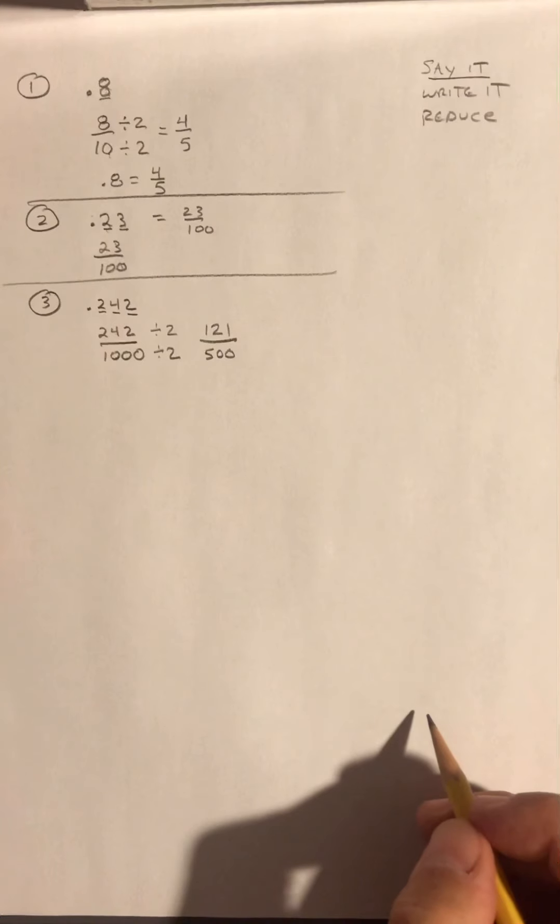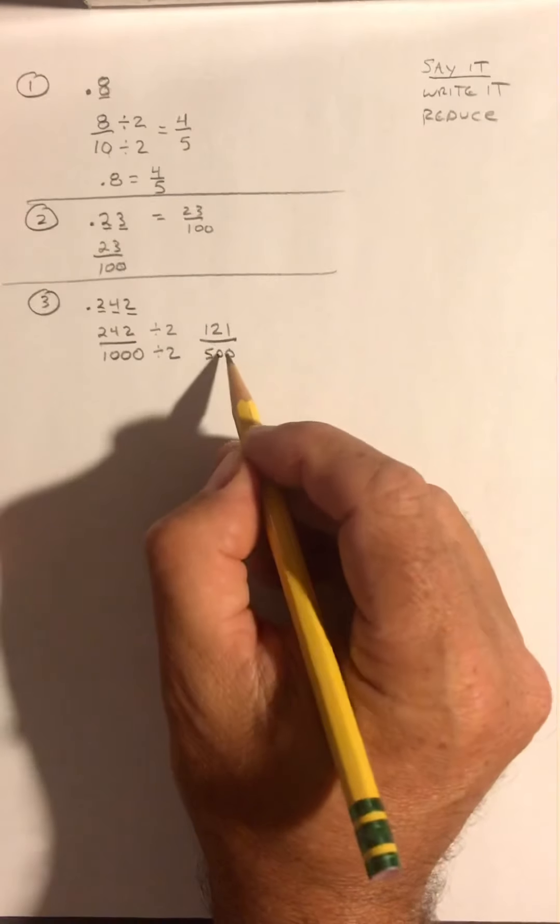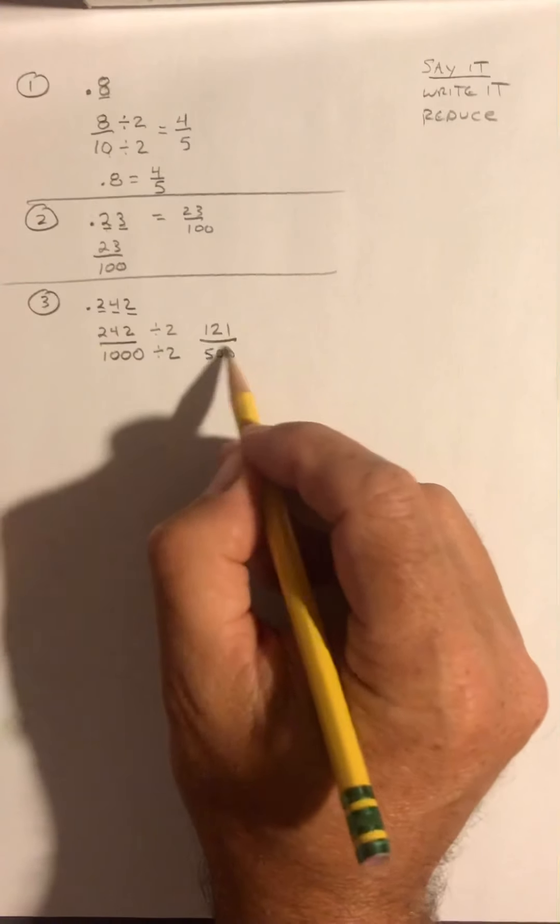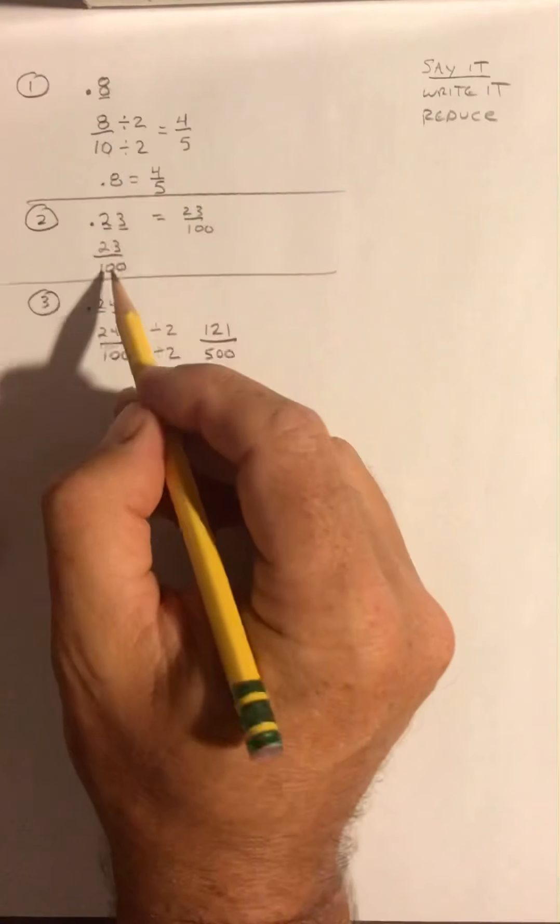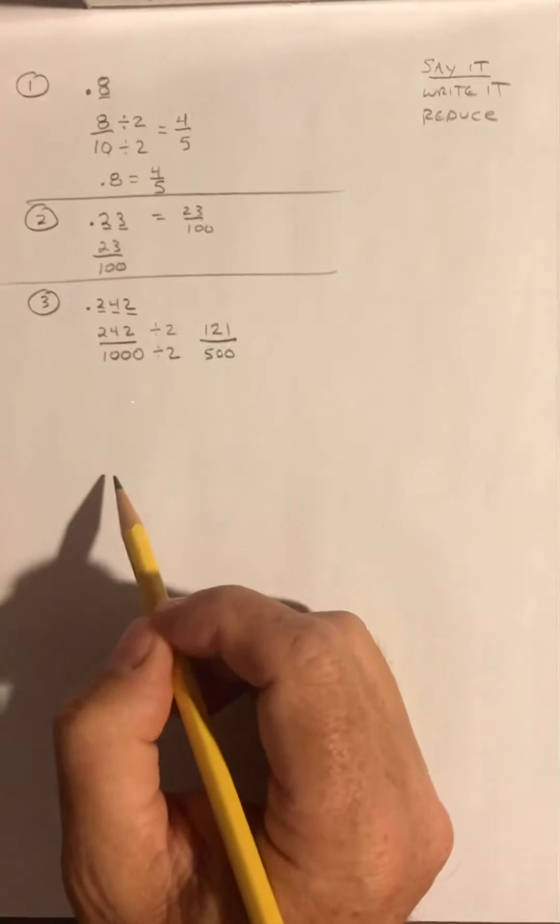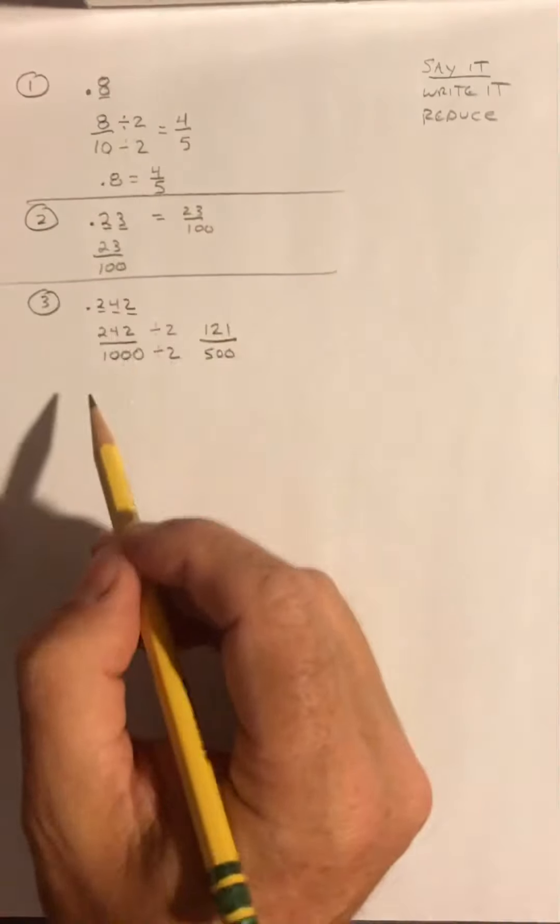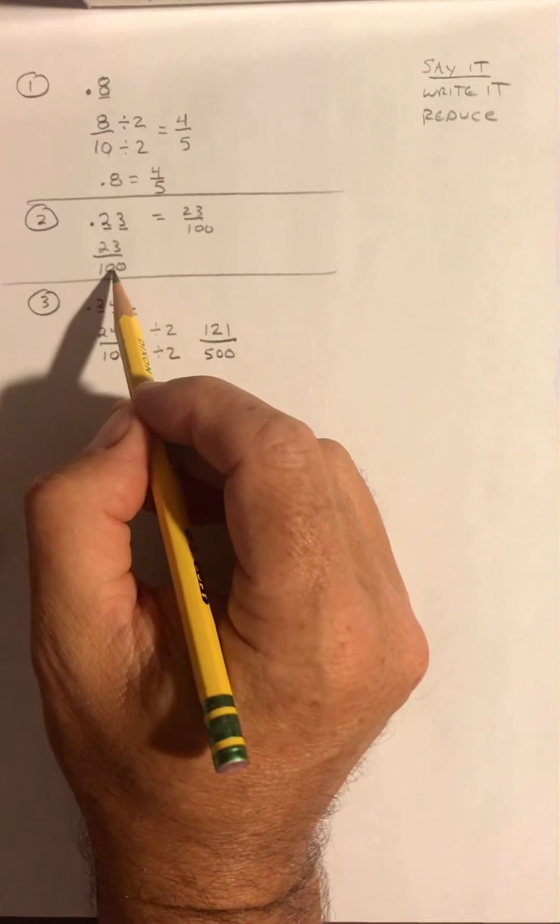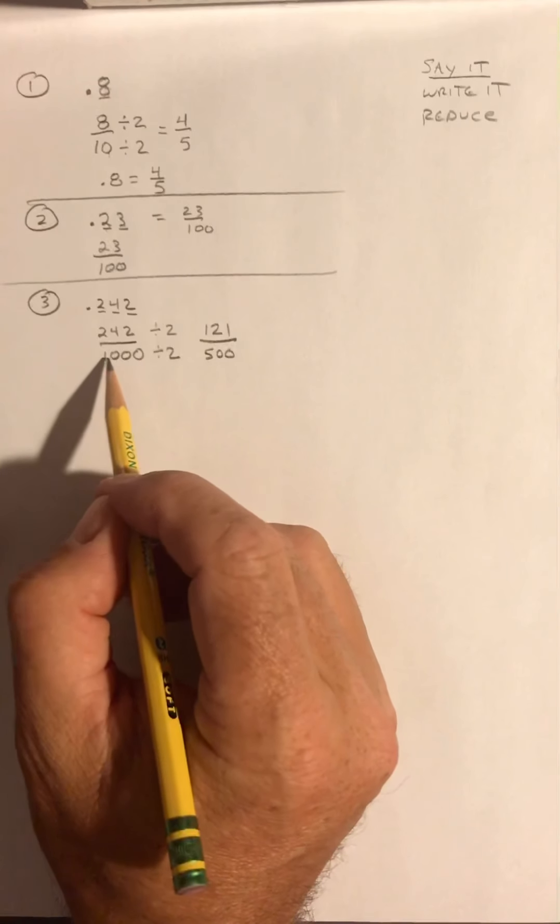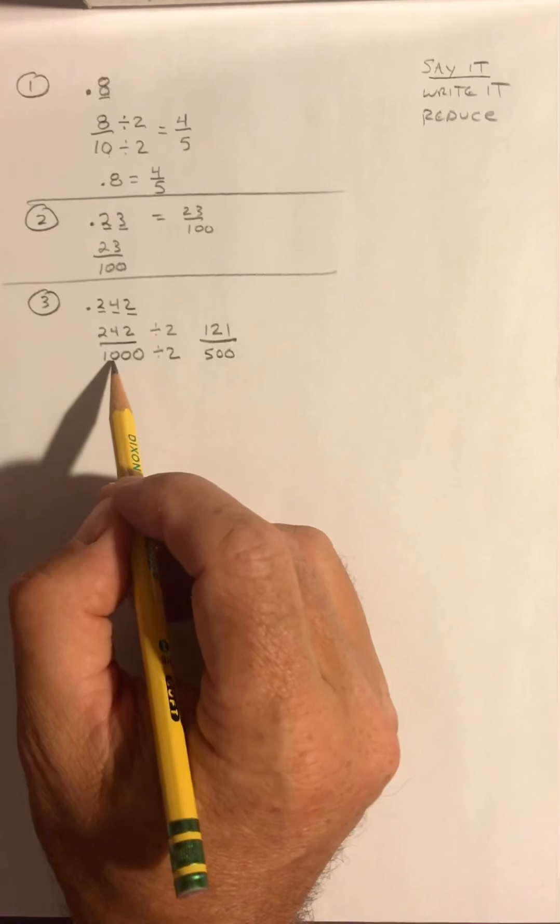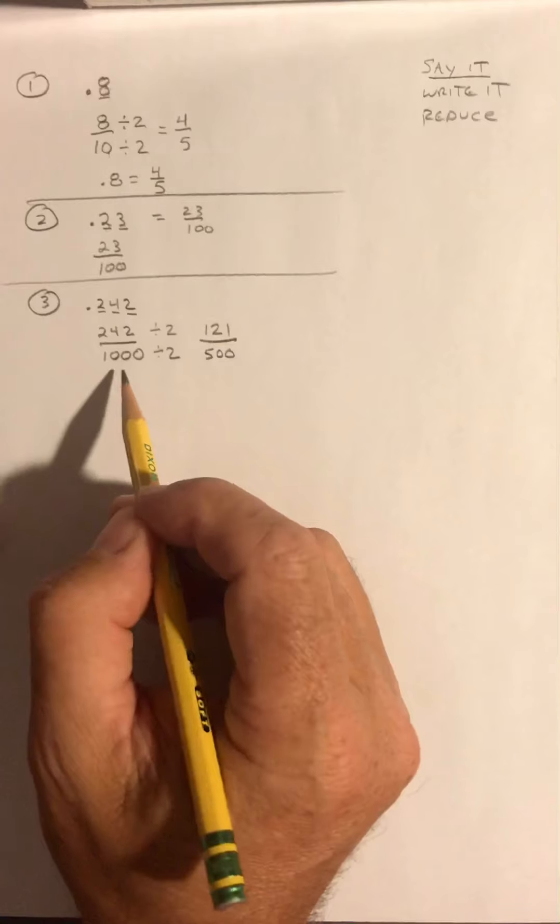I know this cannot be reduced any further because 500 is made up of all 2s and 5s. In fact, all of these denominators are made up of 2s and 5s. 10 is 2 times 5. 100 is 2 times 5 times 2 times 5. And 1,000 is 2 times 5 times 2 times 5 times 2 times 5.